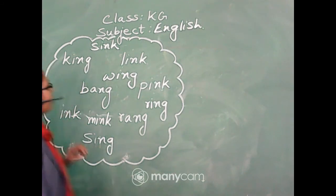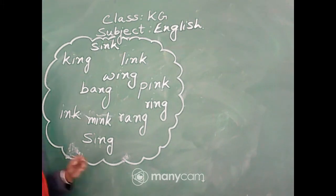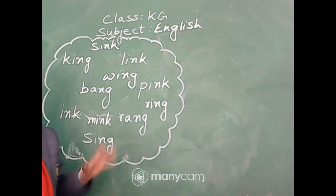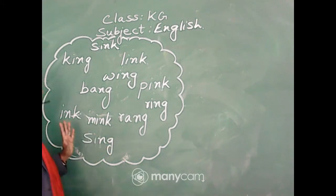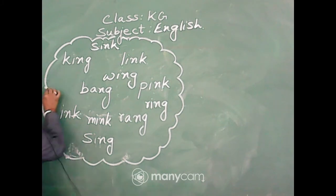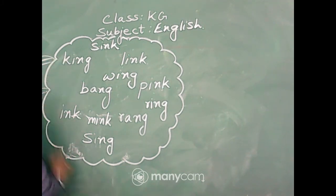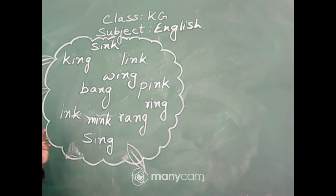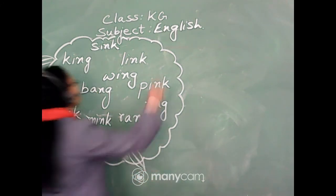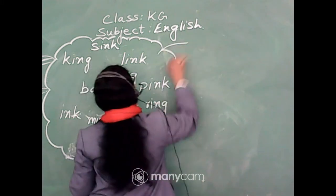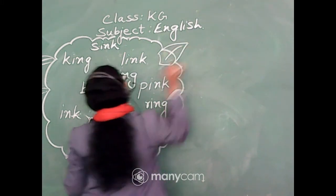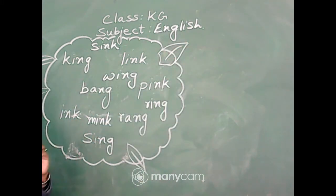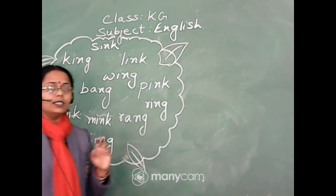So here, according to your textbook, some of the words have been jumbled up. They have been given in this bush — you can see there is a lovely decorated bush. From this bush you have to find out some sound words.